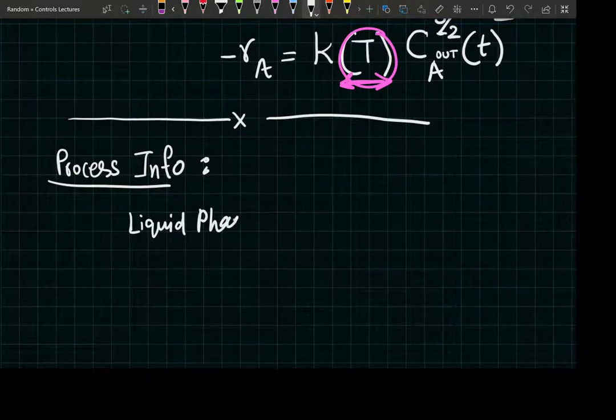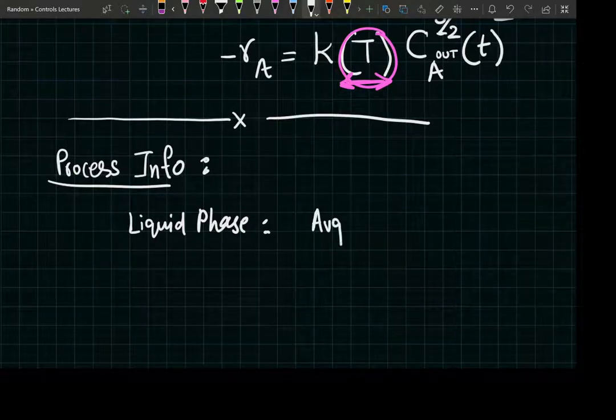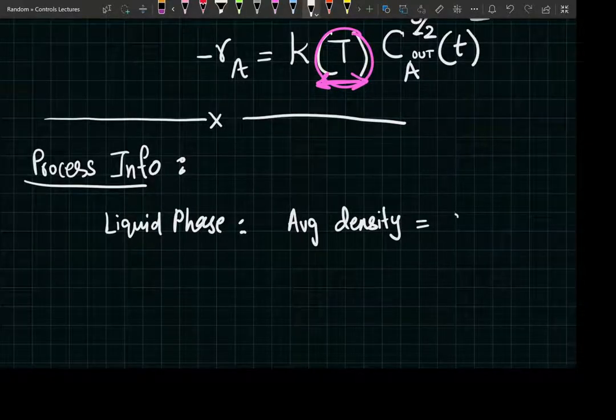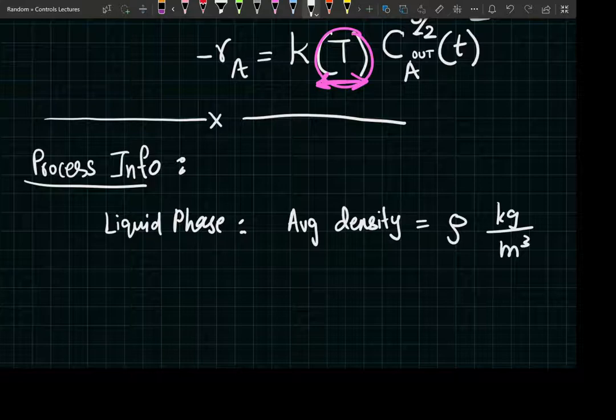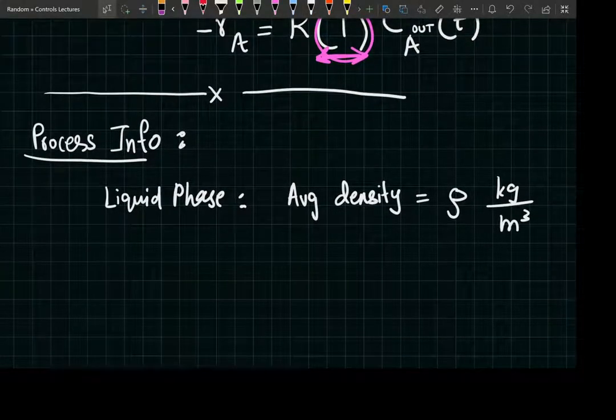Since it is a liquid phase reaction, liquid phase setup, we're going to assume that we take the average density of both the inlet and the outlet and keep it symbolically equal to rho, kilogram per meter cubed. How good of an assumption that is depends on the kind of process you're dealing with.